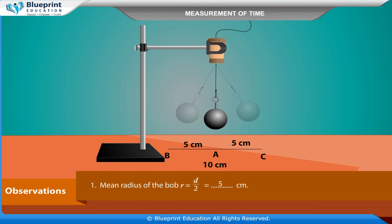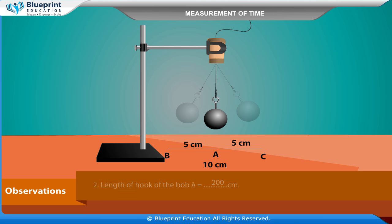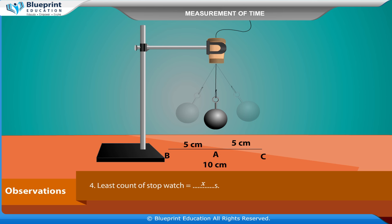Observations: Mean radius of the bob R = D/2 = 5 cm. Length of hook of the bob H = 200 cm. Standard value of g = 980 cm/s². Least count of stopwatch = X seconds. Zero error of stopwatch = X seconds. Zero correction of stopwatch = X seconds.